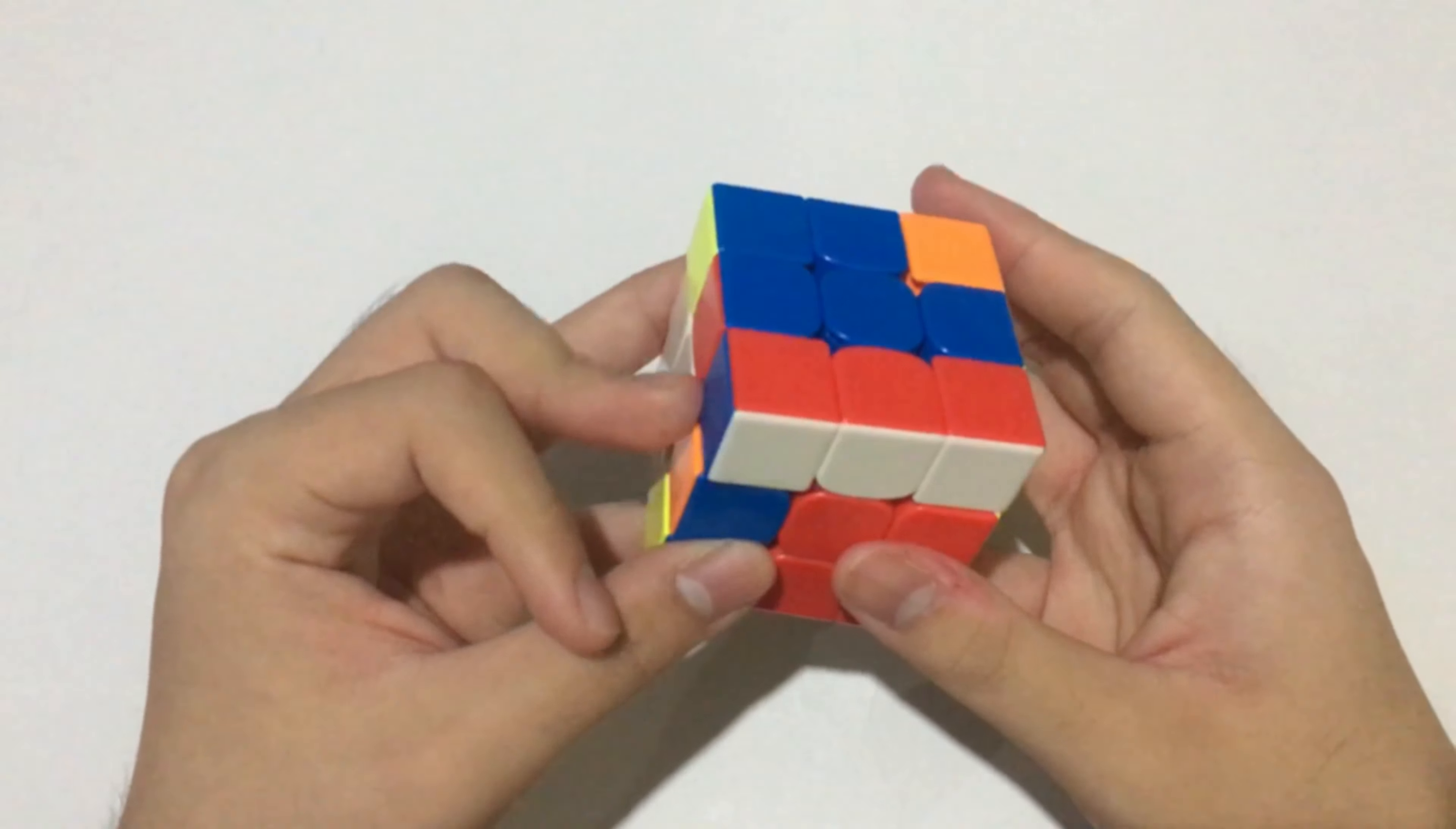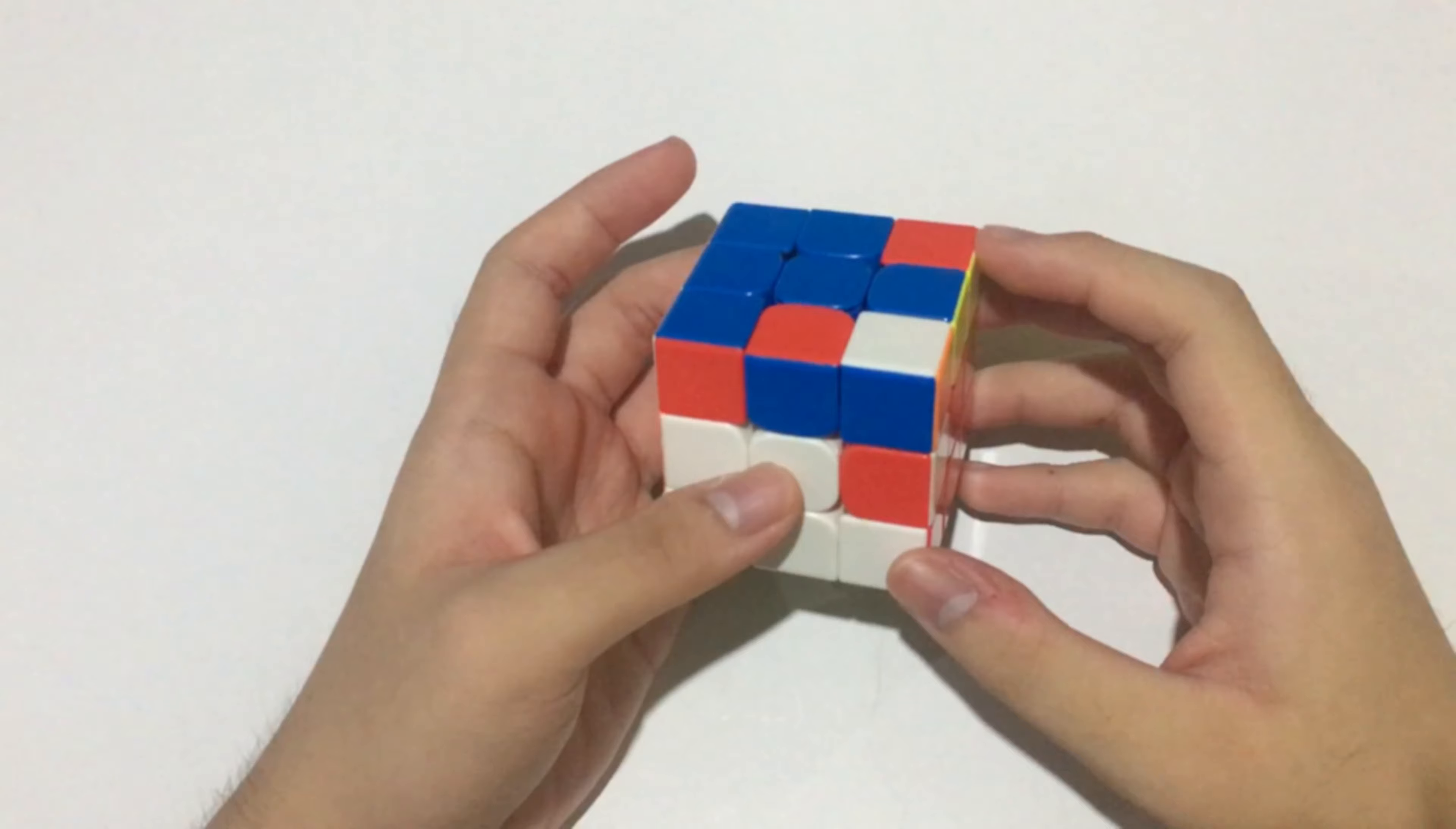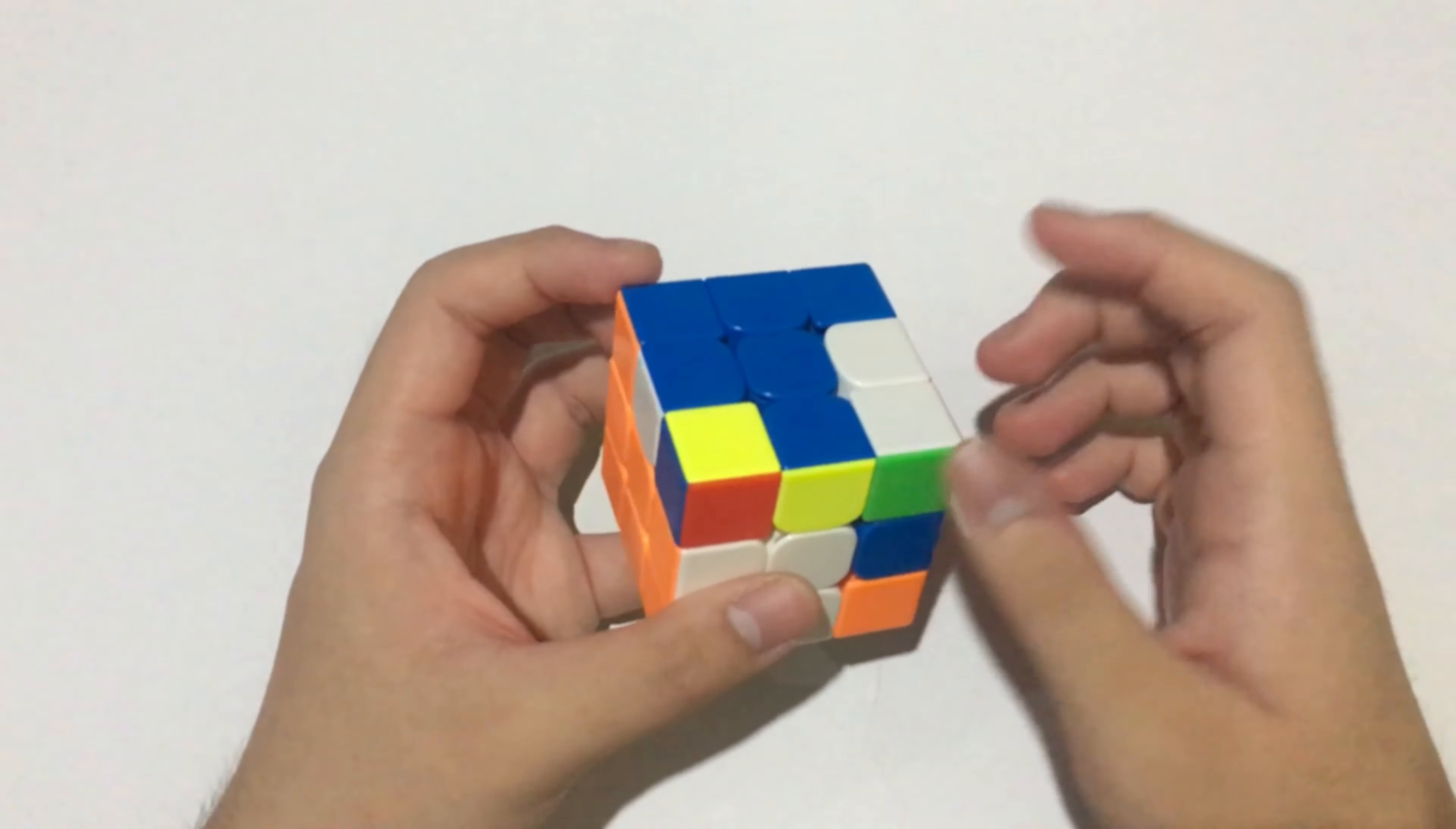I can preserve the edge orientation. Instead of doing back Sune, which would give me U perm, I did U anti-Sune, which gave me H perm. For this F2L case, you'll just need to do a sledgehammer, then solve this F2L pair by doing that. In this case, you can also do Winter Variation.